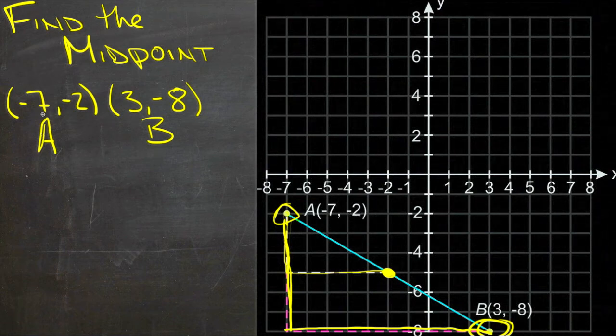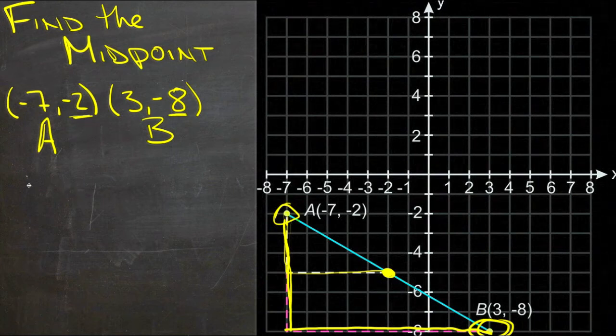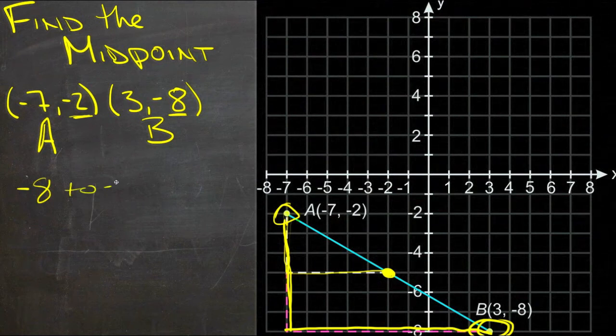So looking at this one, we'll take a look at first the vertical difference. We have our -2, which is one of our y-coordinates, and -8, which is the other y-coordinate. So we're going from -8 to -2. Well, that's a difference of 6 steps.